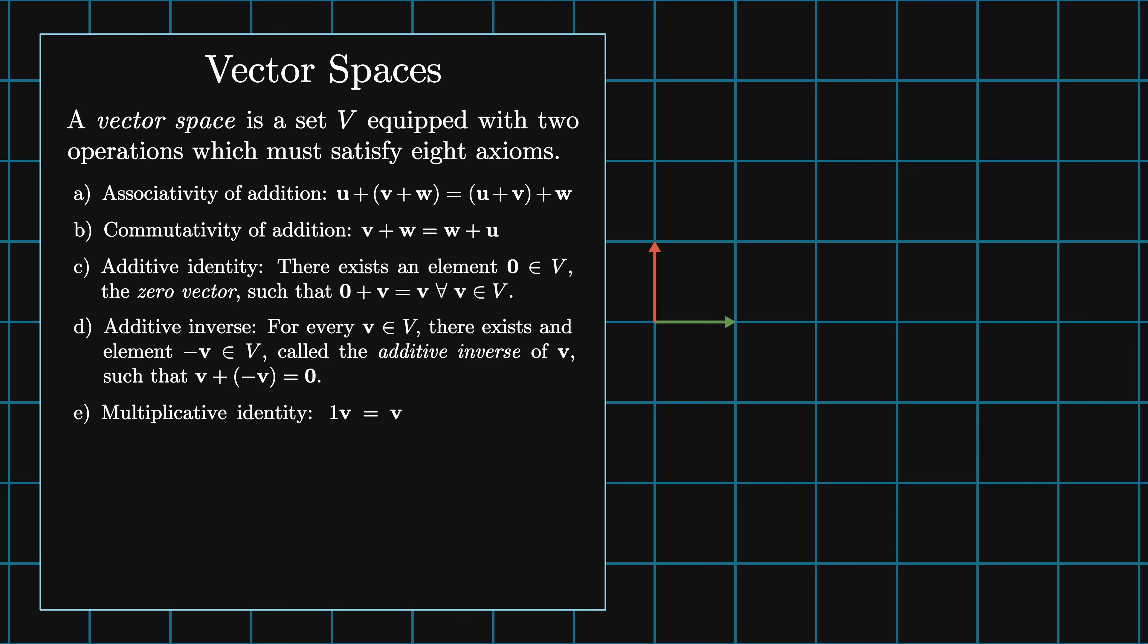Multiplicative identity: the scalar one times v is equal to v. Associativity of scalar multiplication: the scalar a times the vector bv is equal to the scalar product ab times v, where a and b are scalars and v is a vector. Distributivity of scalar multiplication: scalar a times vectors u plus v is equal to a times u plus a times v. Distributivity of vector multiplication: scalars a plus b times vector v is equal to a times v plus b times v.